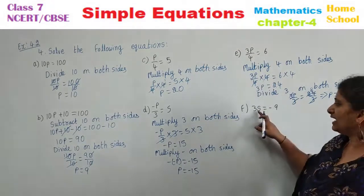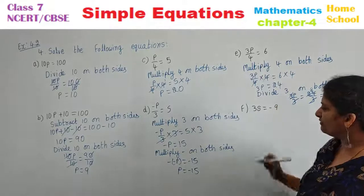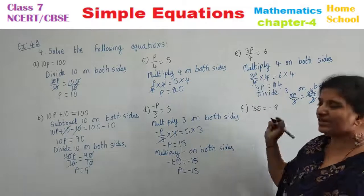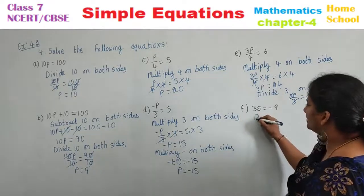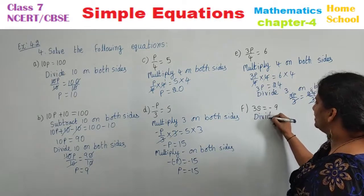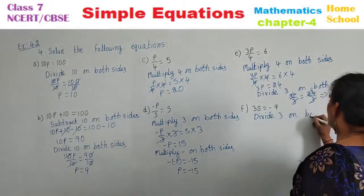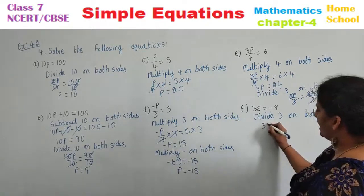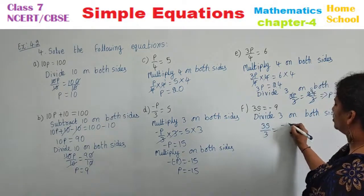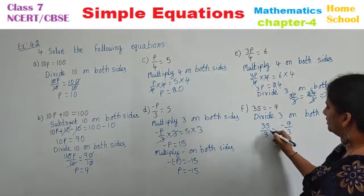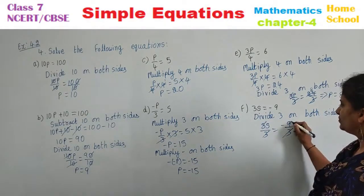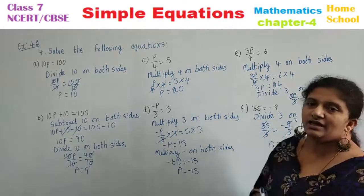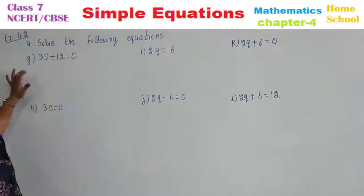Next sub-question — 3S (it is not 35): 3S is equal to minus 9. For the variable, 3 is multiplied, so we need to divide with that number. Divide 3 on both sides. 3S by 3 is equal to minus 9 by 3. 3 and 3 cancel. 3 threes are 9. Therefore S is equal to minus 3 is your answer.